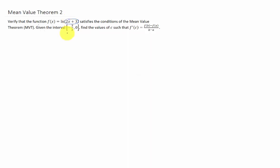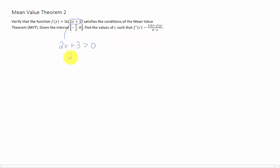The mean value theorem requires that our function be continuous on this closed interval here. Well, we know that the argument inside of a logarithm, in this case 2x plus 3, has to be greater than 0. You can't plug 0 or negative values into a logarithm. So if we subtract 3 from both sides of this inequality and divide both sides by 2, we get that x has to be greater than negative 3 halves.